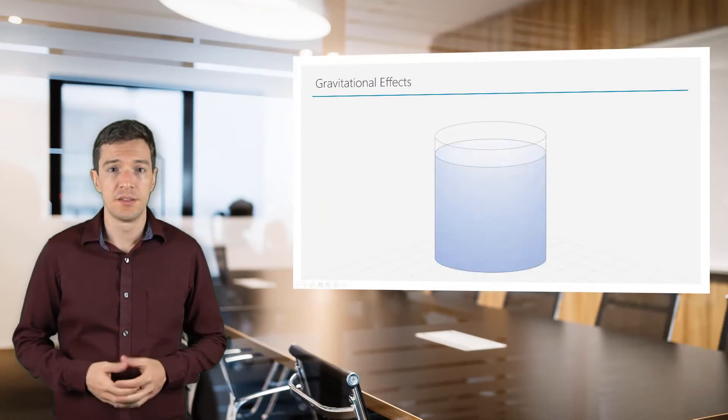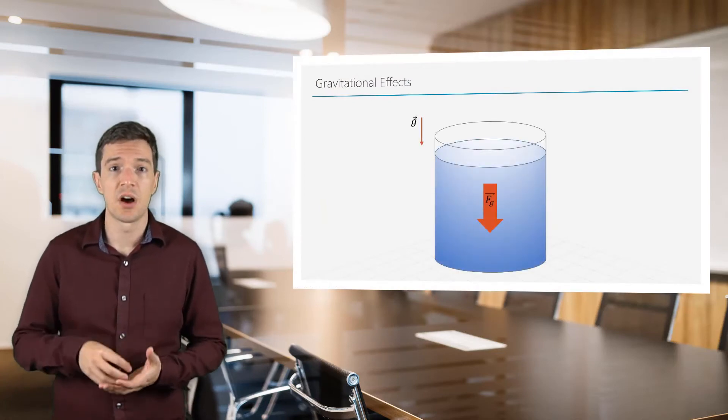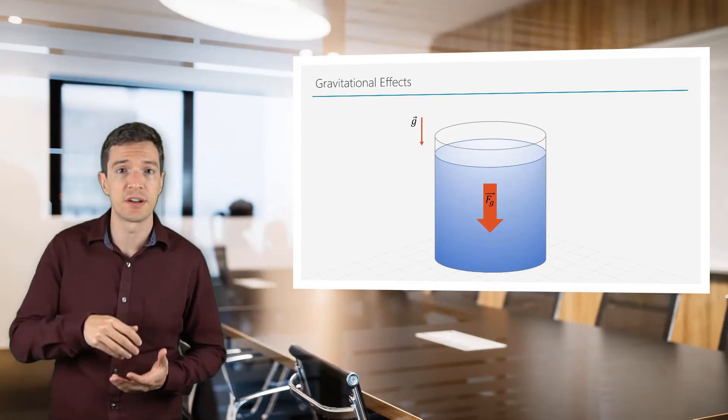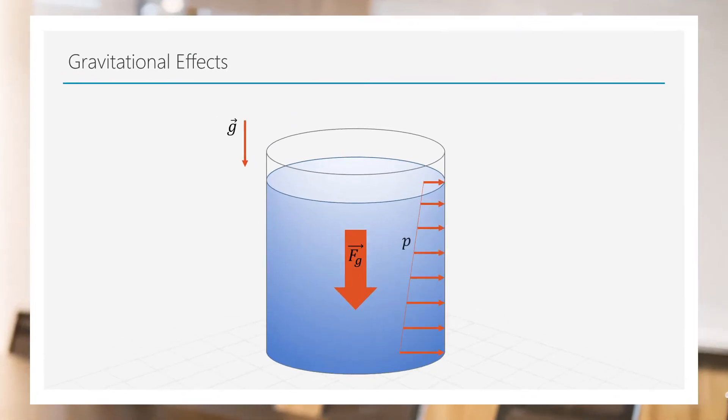Gravity itself acts as a body force on the fluid. This is because the fluid has a mass and a force will act on the fluid in the direction of the gravitational acceleration vector, creating a pressure variation in the fluid.